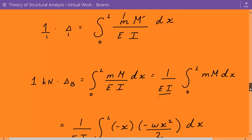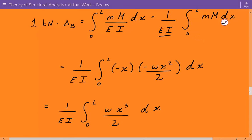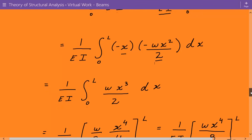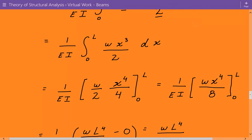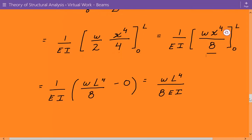And so we have negative X times negative WX squared over 2. And that's equal to WX cubed over 2. And then we integrate that and we get 1 over EI times WX to the fourth power divided by 8. And the limits of integration are from 0 to L. So we just plug in the numbers, and we get that it comes out to be WL to the fourth power divided by 8EI.